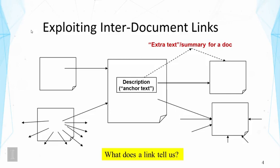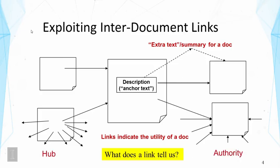Looking at the bottom part of this picture, there are patterns of links that indicate the utility of a document. On the right side, a page that has received many in-links means many other pages are pointing to it, showing it is quite useful. On the left side, a page that points to many other pages is a directory page. We can call the first case an authority page and the second a hub page. Link information helps in two ways: it provides extra text for matching, and it provides additional scores characterizing how likely a page is a hub or an authority.